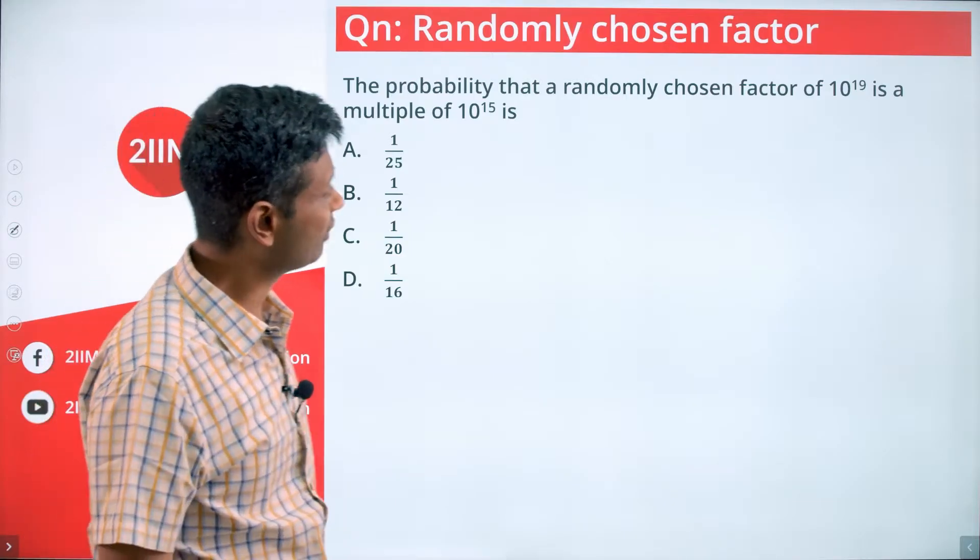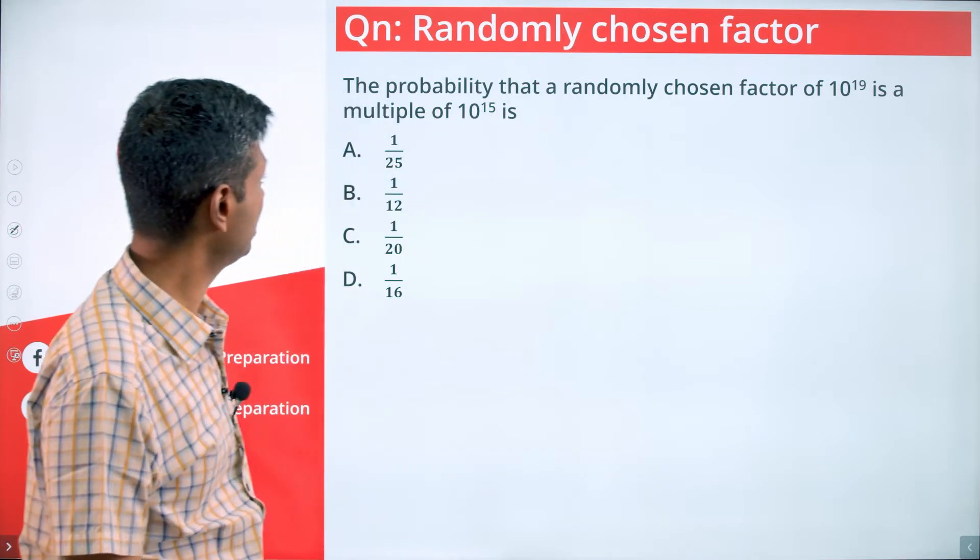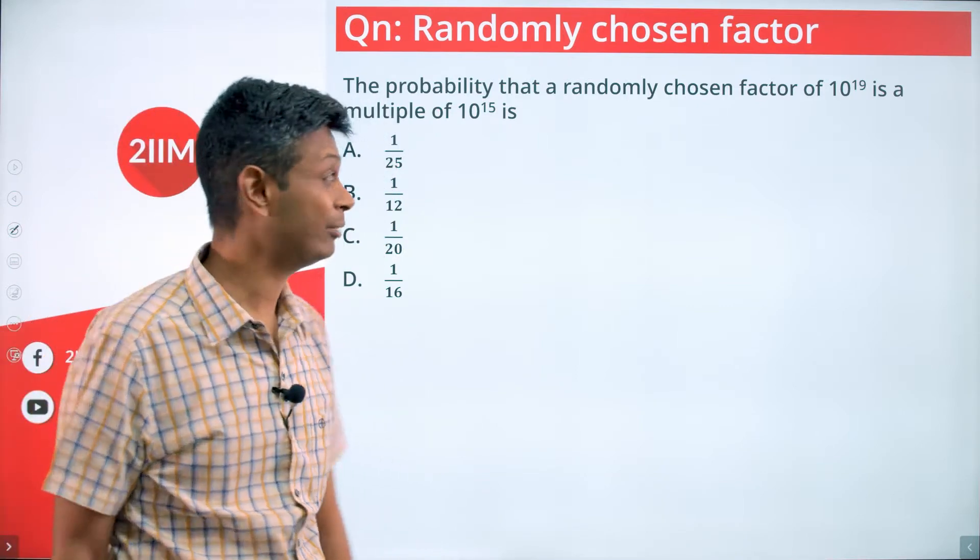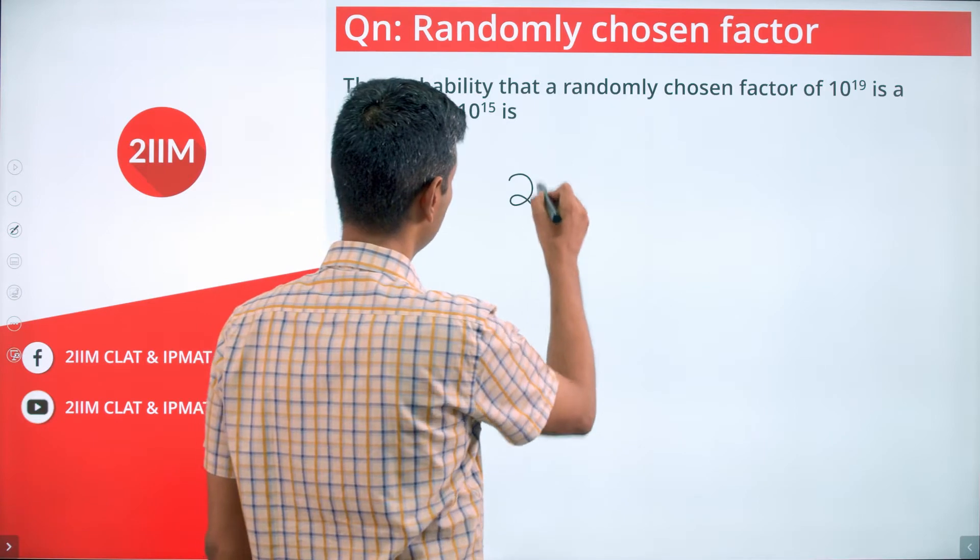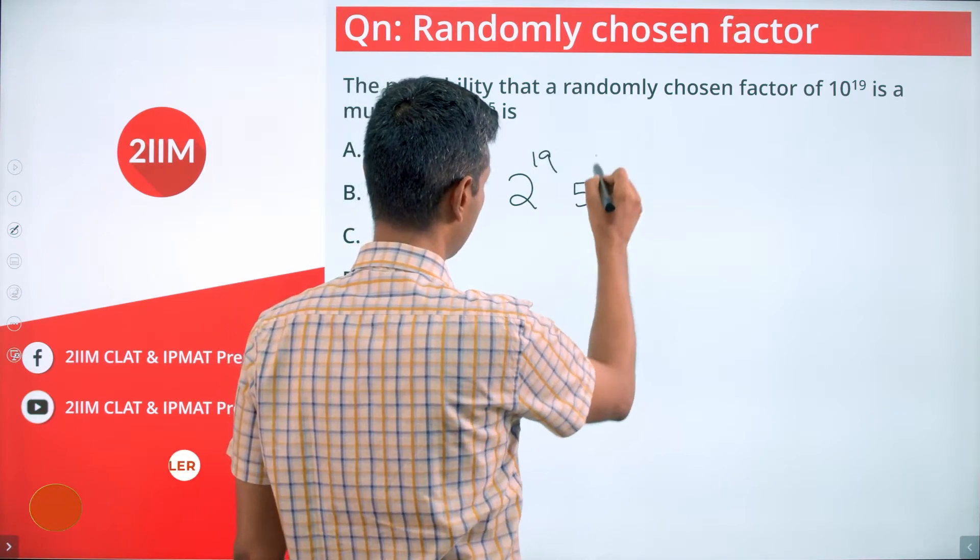The probability that a randomly chosen factor of 10 power 19 is a multiple of 10 power 15 is... 10 power 19 is 2 power 19 into 5 power 19.